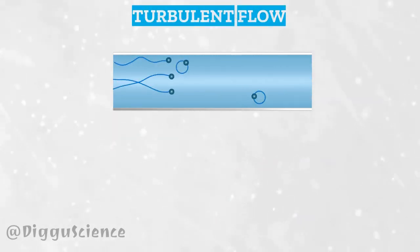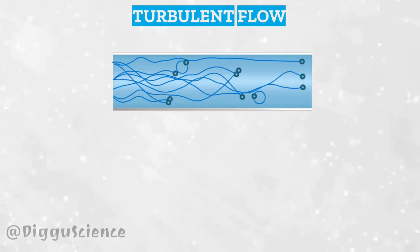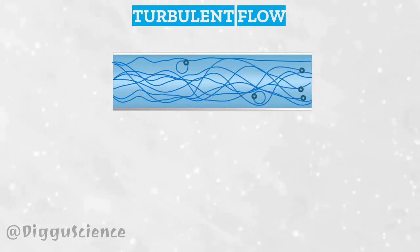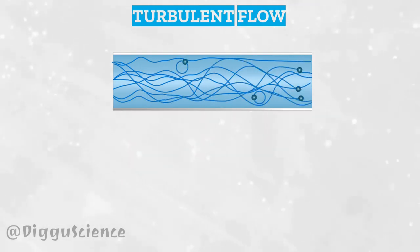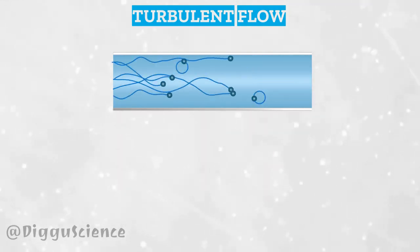Meanwhile, in turbulent flow, the shape of the flow line is always changing at any time. The shape is uncertain, intersecting each other. Some even just going around in circles.